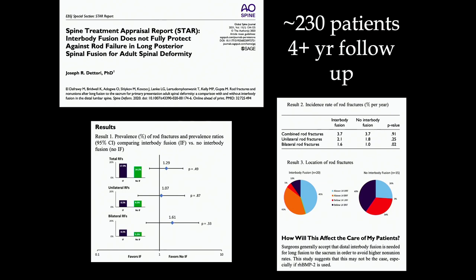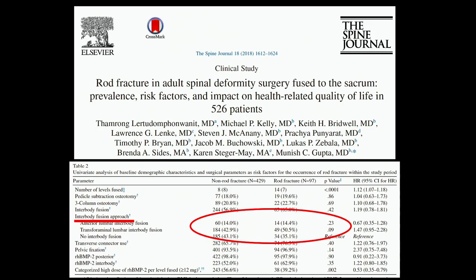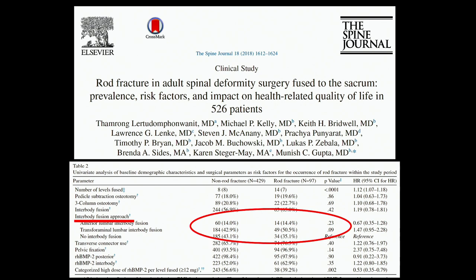A paper from WashU looked at 230 patients with four-plus year follow-up. Results showed that interbody or no interbody really has no bearing on the incidence of rod fracture — which is very interesting. In a more granular analysis of 526 patients, the interbody fusion approach — whether ALIF or TLIF versus no interbody — had no significant difference in rod fracture incidence. In a meta-analysis on the utility of interbody, at L5-S1 it's not so much the interbody that makes a difference — it's actually the use of pelvic fixation.